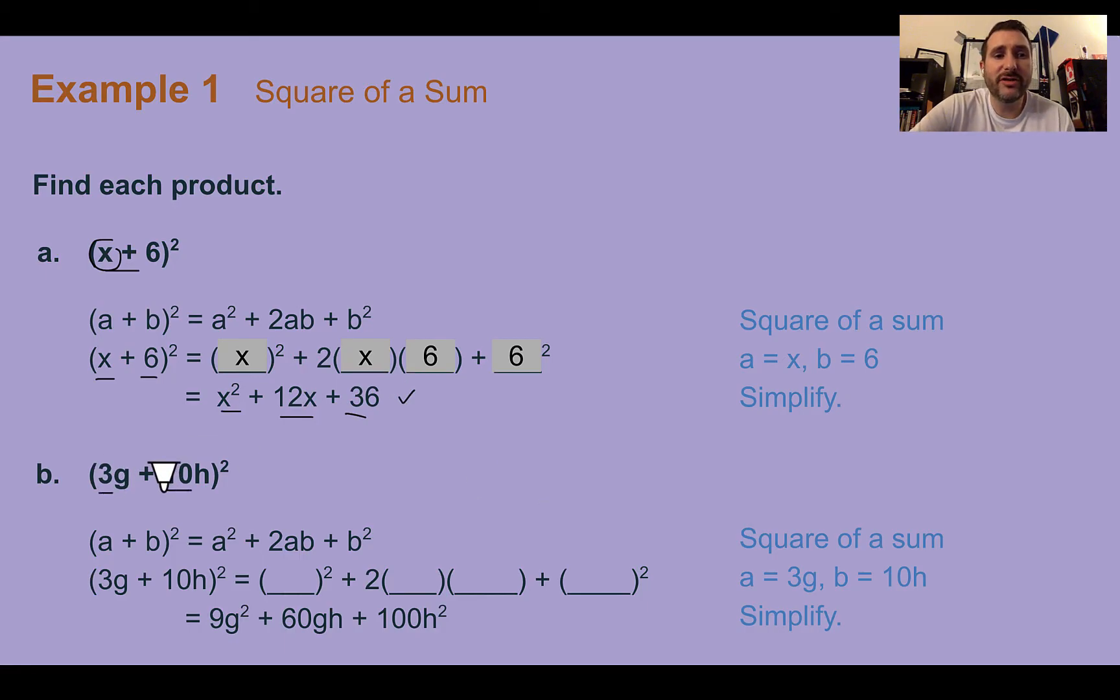The same works if we have numbers in front of our variables or even multiple variables. We just follow the same rules when we did exponent rules. So first number squared plus 2 times the two things multiplied together, and then last number squared. When we're doing this, remember we need to distribute the exponent. So 3 times 3 is 9, G times G is G². 2 times 3 times 10 is 60 with a G and an H. And then 10 times 10 is 100, H times H is H².